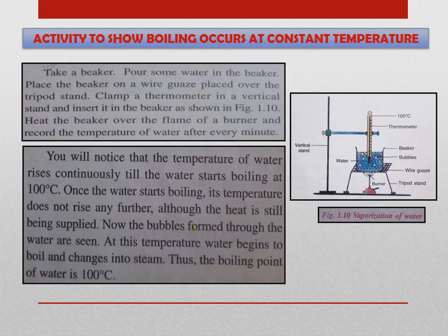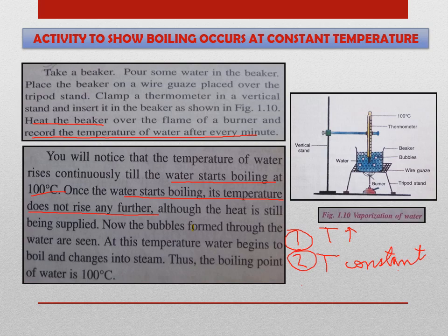Here is an activity to show that boiling occurs at constant temperature. Take a beaker, pour some water in it, heat it, and record the temperature after every minute. You will observe that initially the temperature increases and then it reaches 100°C. At 100°C, the temperature will become constant for a few minutes and the water will begin to boil and change into steam. Therefore, the boiling point of water is 100°C.